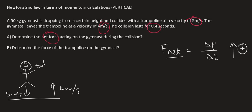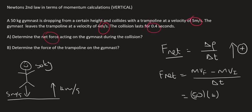When we use F_net equals change in momentum, we know that change in momentum is MV_final minus MV_initial over delta t. Now you simply fill things in. The mass is 50, the final velocity is 4, and it's positive.